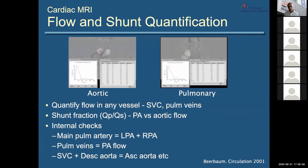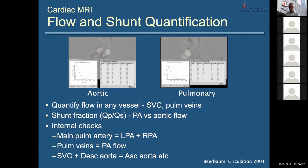For example, if you measure flow in the aorta and the pulmonary arteries, you can derive a QP/QS — a shunt fraction. What I really like about flow with MRI is that if you do enough flow measurements, you have a whole lot of internal checks to ensure your data is accurate. For example, if you measure the main pulmonary artery plus the right and left branches, if that all adds up as it should, you know your data is accurate.